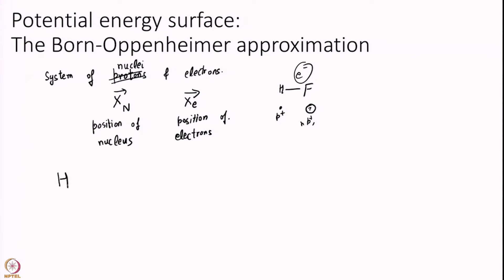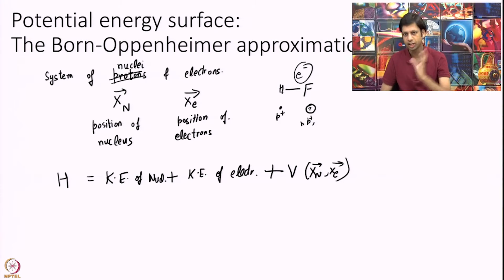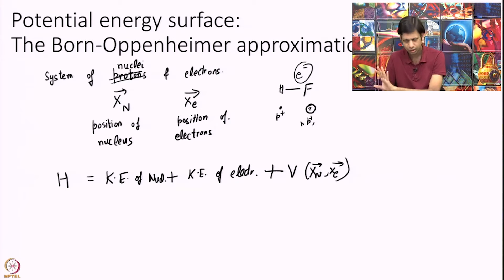I can write the Hamiltonian as kinetic energy of nucleus plus kinetic energy of electrons, plus some potential which is the Coulomb potential. I am writing kinetic energy of nuclei plus kinetic energy of electrons and the net potential energy. There is a concrete mathematical form for this, but let us not worry about that.